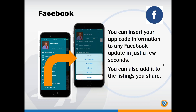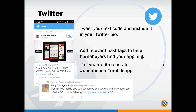You can insert your app text code or URL, or share a property directly to Facebook using the Share This App button or the share button on a property. Twitter is also a great platform — you get about 150 characters to be concise. For example, one agent tweets: 'Get my free mobile app to view homes everywhere and anywhere. Text [code] to 87778.' and also provides his URL.